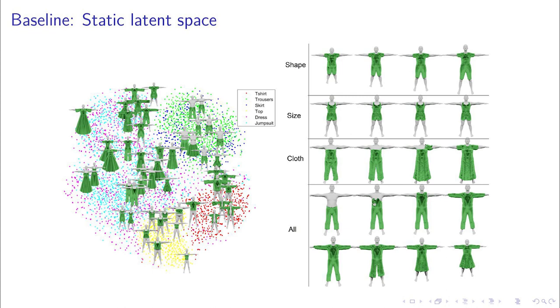In the right image, we see the effects of interpolating these features. In the first row, the body shape is modified while the rest is kept constant. On the next row, we change the size of the garment. The third row shows an interpolation through the garment type space. Finally, the last two rows represent a continuous interpolation of all static features at once.